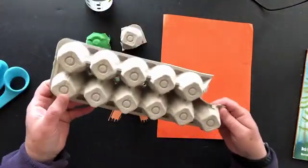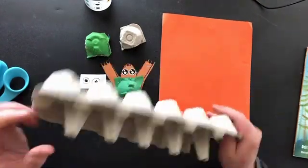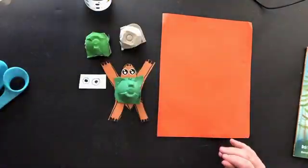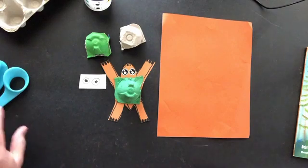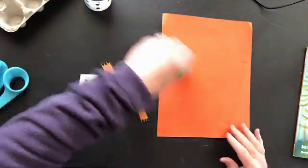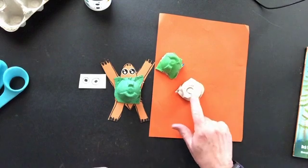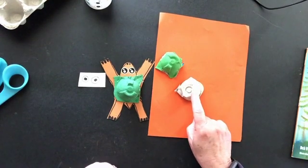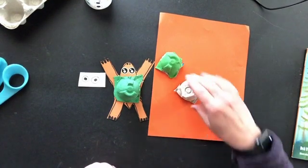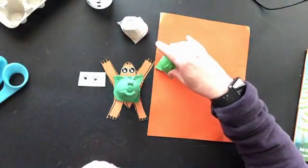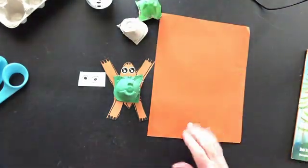So the first thing you're going to want to do to make your turtle is to cut out one of the little cups of a cardboard egg carton to use. And then your next step is going to be to paint that using whatever kind of paint you have and then let it dry.